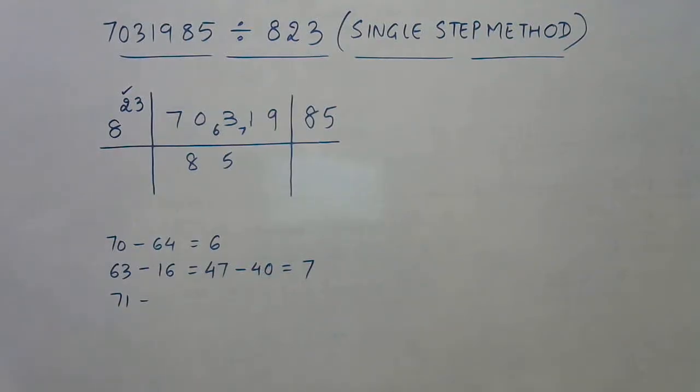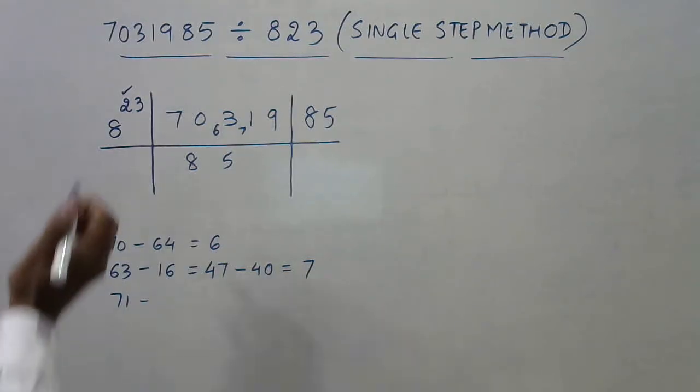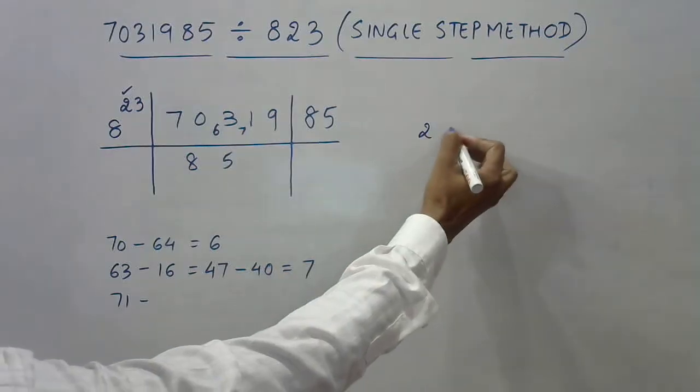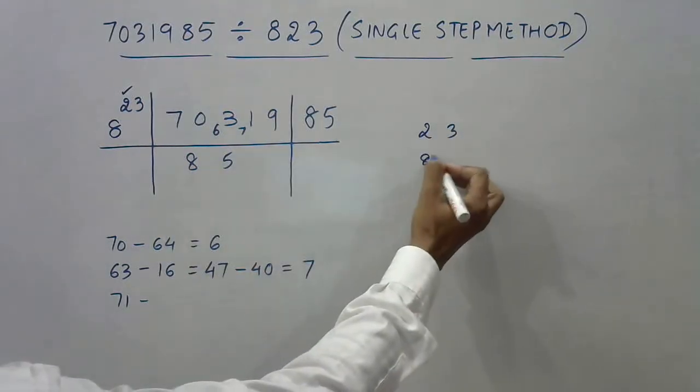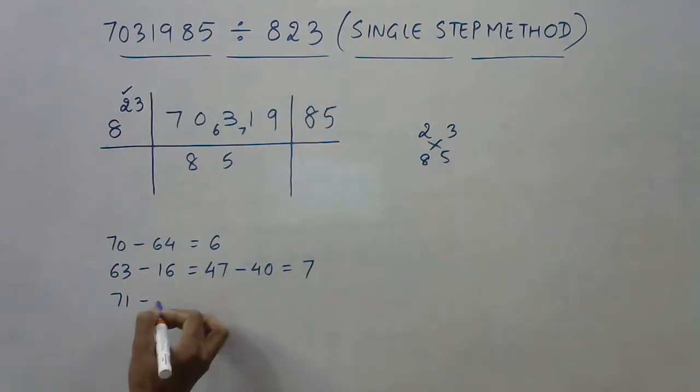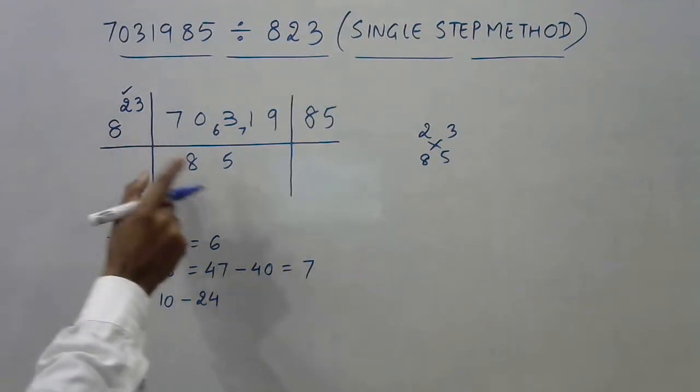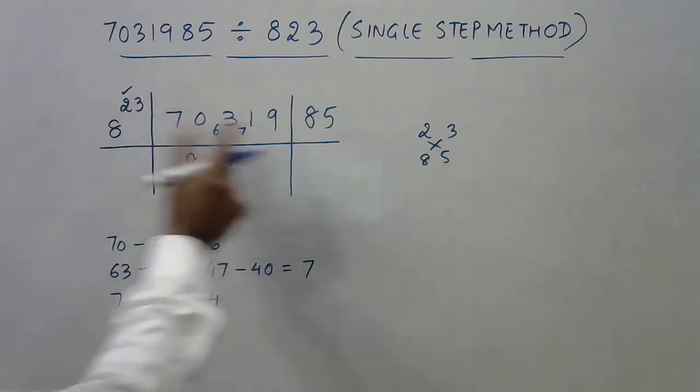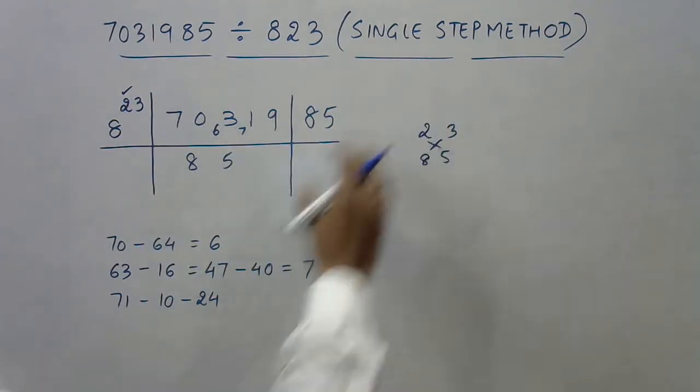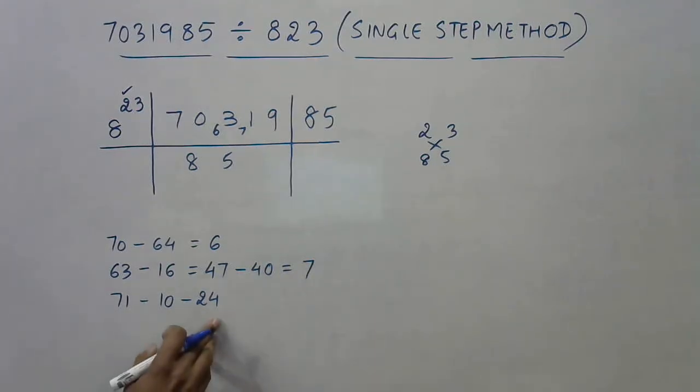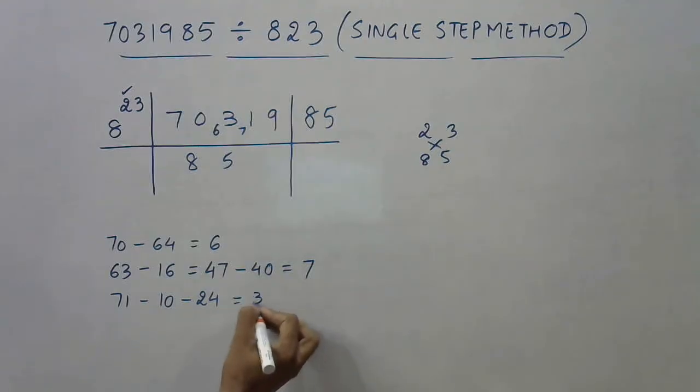Now 71, again I need to subtract something. From here the process will involve subtracting two numbers rather than one number. What are those two numbers? This is 23 and this is 85. Just cross-multiply them and add. This is 10, so subtract 10. And 8 times 3 is 24, so subtract 24. When you have two digits here and two digits here, cross-multiply and add, and that number is to be subtracted from the new dividend.